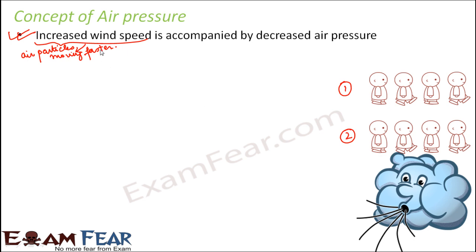When we talk about wind speed, we are talking about the air particles — each of these children represents an air particle. When air particles are moving slowly, that means the wind speed is less, and they have enough time to exert pressure on objects.